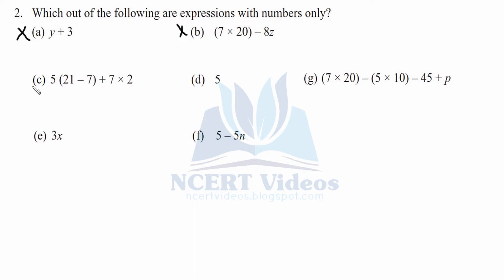Now, here we can clearly see that all are numbers. Therefore, it suits our criteria — we will tick it. Now, 5 is also a constant, it is not a variable. So, we will tick it. For the G part, we can see at last EFP, which is not a number. Therefore, we will cross it.